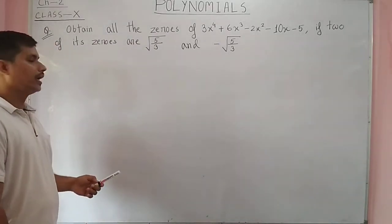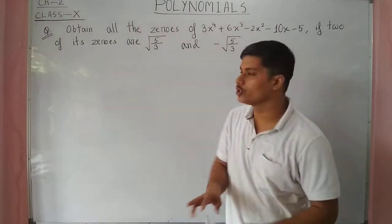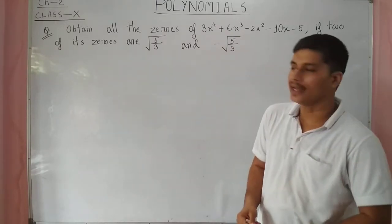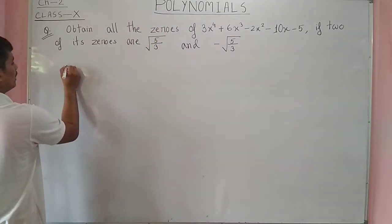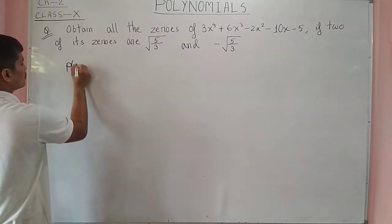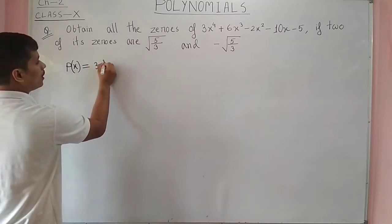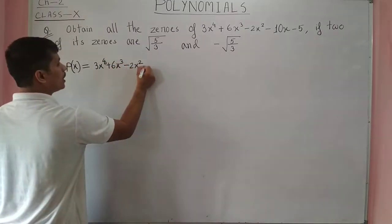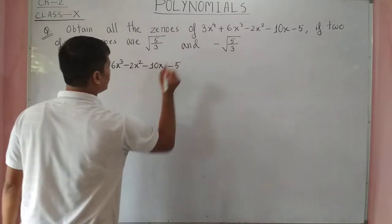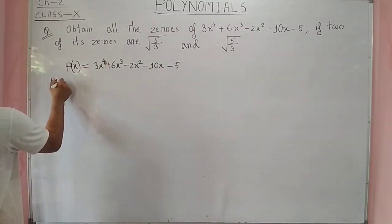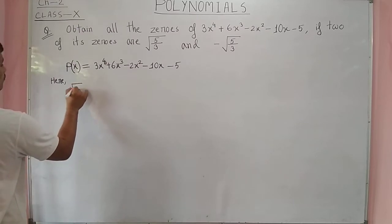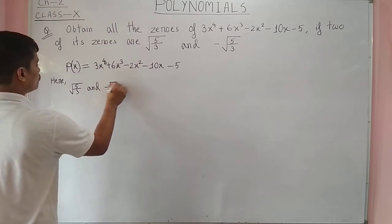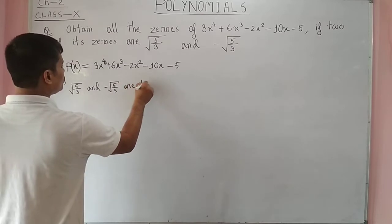We have 2 zeros of this polynomial and the other zeros we have to find. We can write the polynomial as p(x) = 3x⁴ + 6x³ - 2x² - 10x - 5. Here, √(5/3) and -√(5/3) are the zeros of p(x).